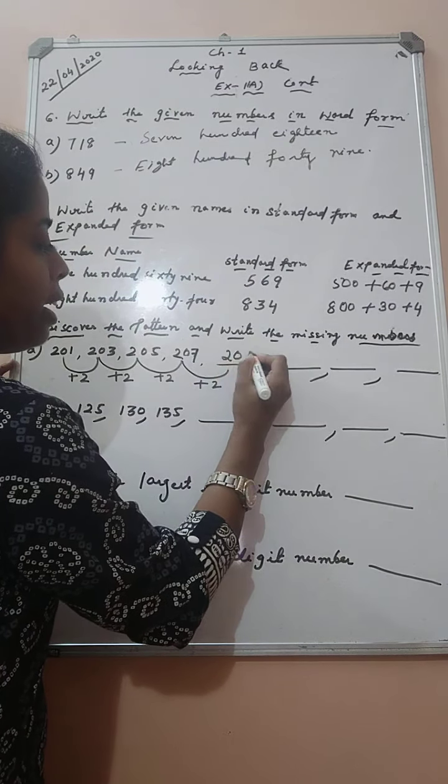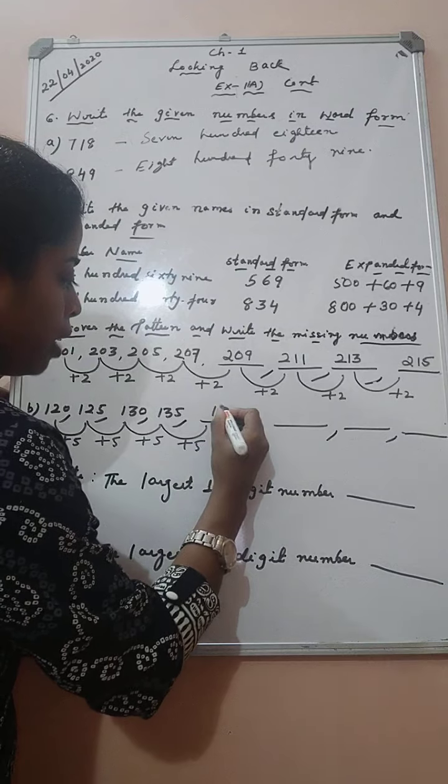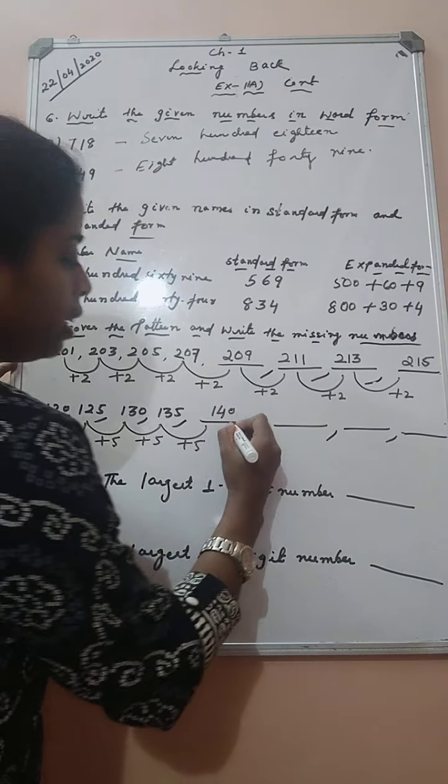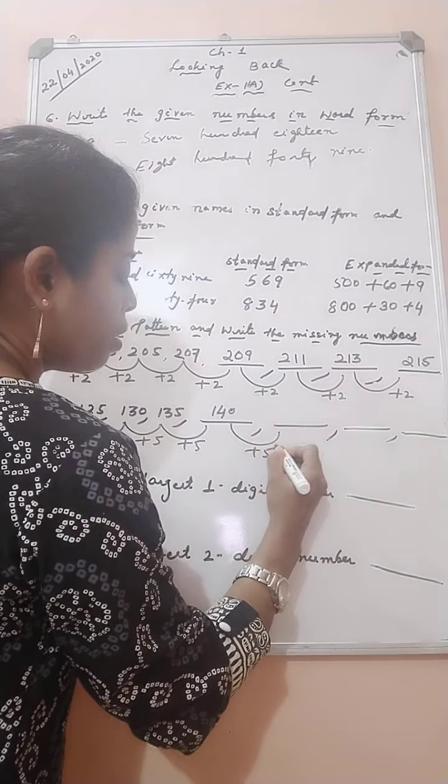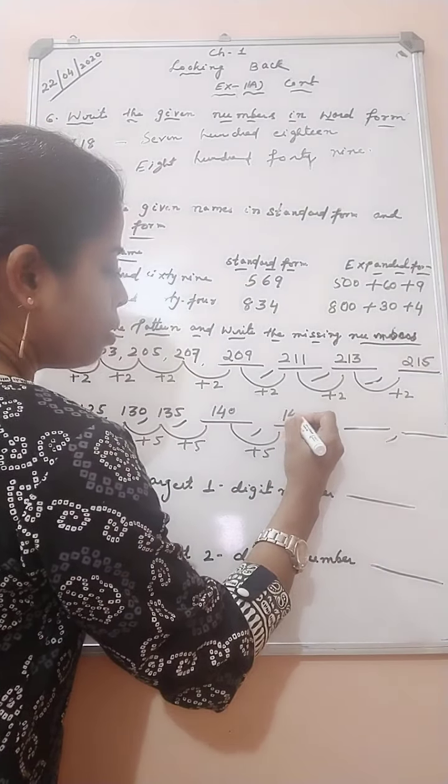So we have to maintain the sequence. Again plus 5, it will become 140. Again plus 5, it is 145. Again plus 5, it will become 150. Again plus 5, it will become 155. Okay.